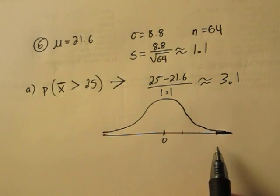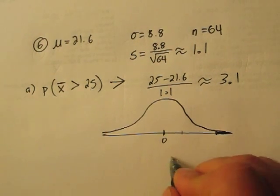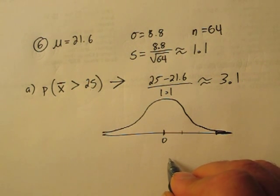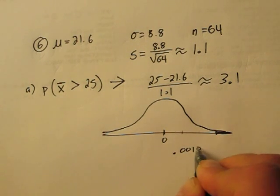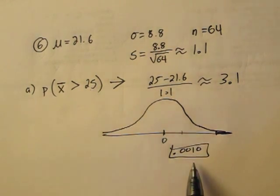When we look it up on the table, it looks like the probability that the average age would be over 25 is about a tenth of one percent.